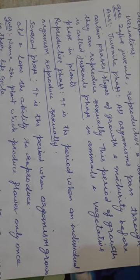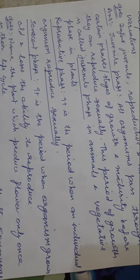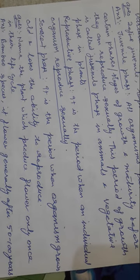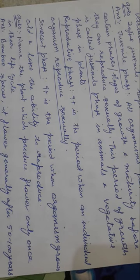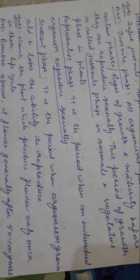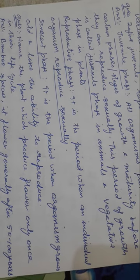Name the plant which produces flowers only once in its life cycle. Bamboo is the plant — it flowers generally after 50 to 100 years, then dies. Name the plant which produces flowers once in 12 years. That is Strobilanthus kunthiana, also called Neelakurinji. It is found in Kerala, Karnataka and Tamil Nadu.